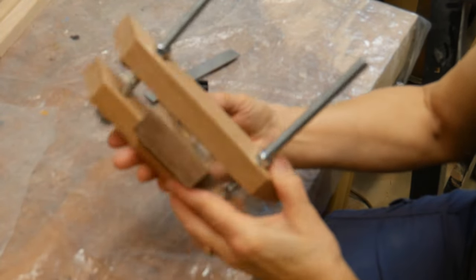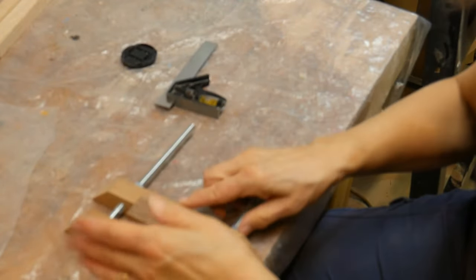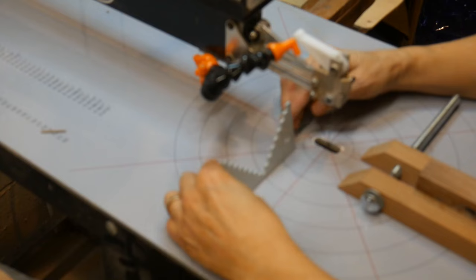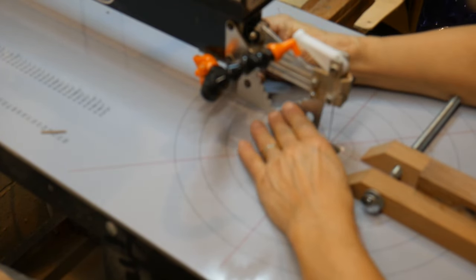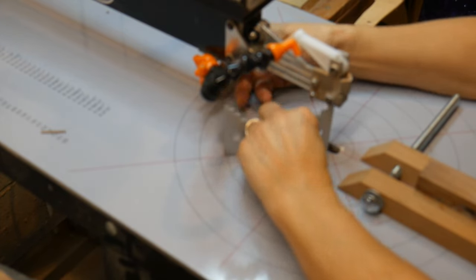It is crucial that your bottom lies flat on the scroll saw so it's a nice even 90 degree angle cut. We're also checking your 90 degree blade angle from the back as well as the sides.